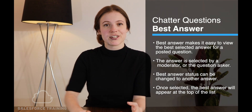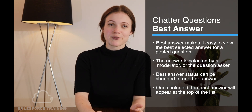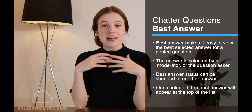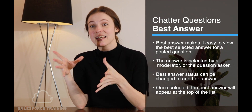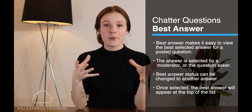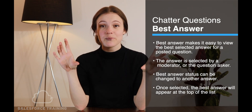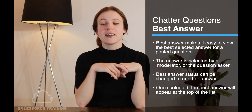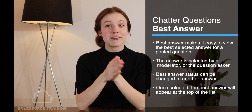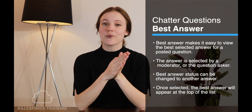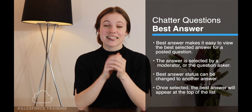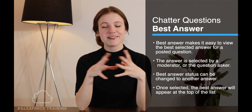The best answer feature means that from the different answers you get to a question posed using Chatter Questions, you can select a best answer. Either the moderator can select this or the question asker can select this. The best answer status will mean that that answer will appear at the top of the list underneath that question. Once a best answer status has been given to a particular answer, it can always be changed later on.